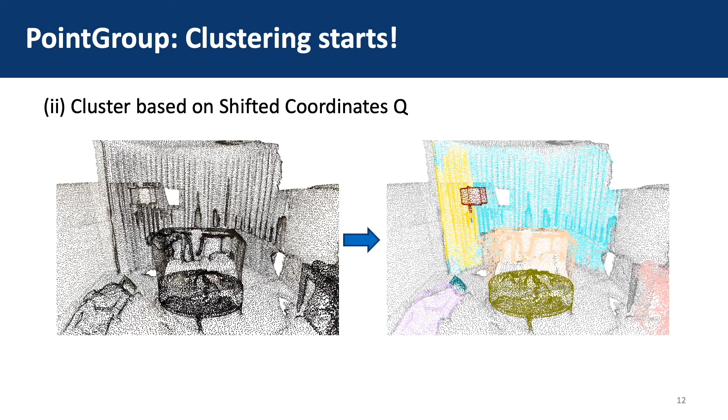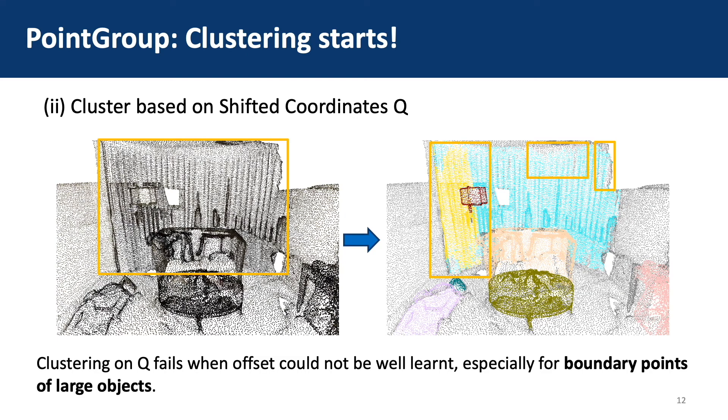However, clustering on Q also has its limitation. In this scene, the inaccuracy of offset prediction for the boundary points of the large curtain causes clustering errors.